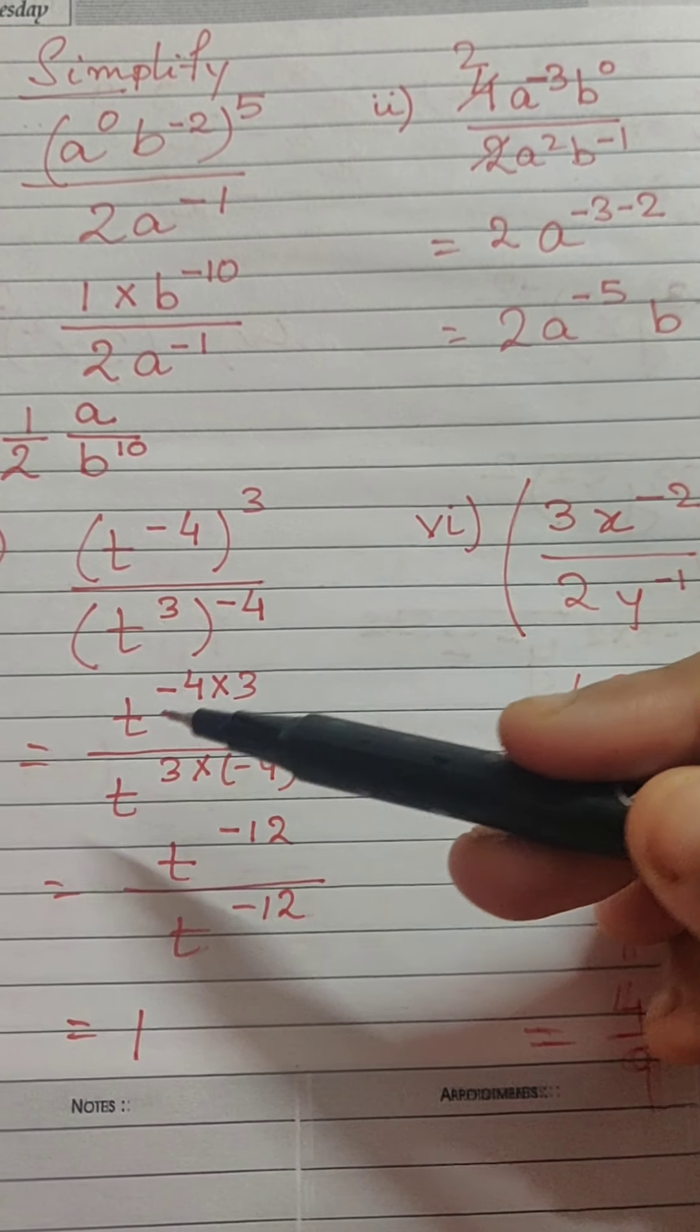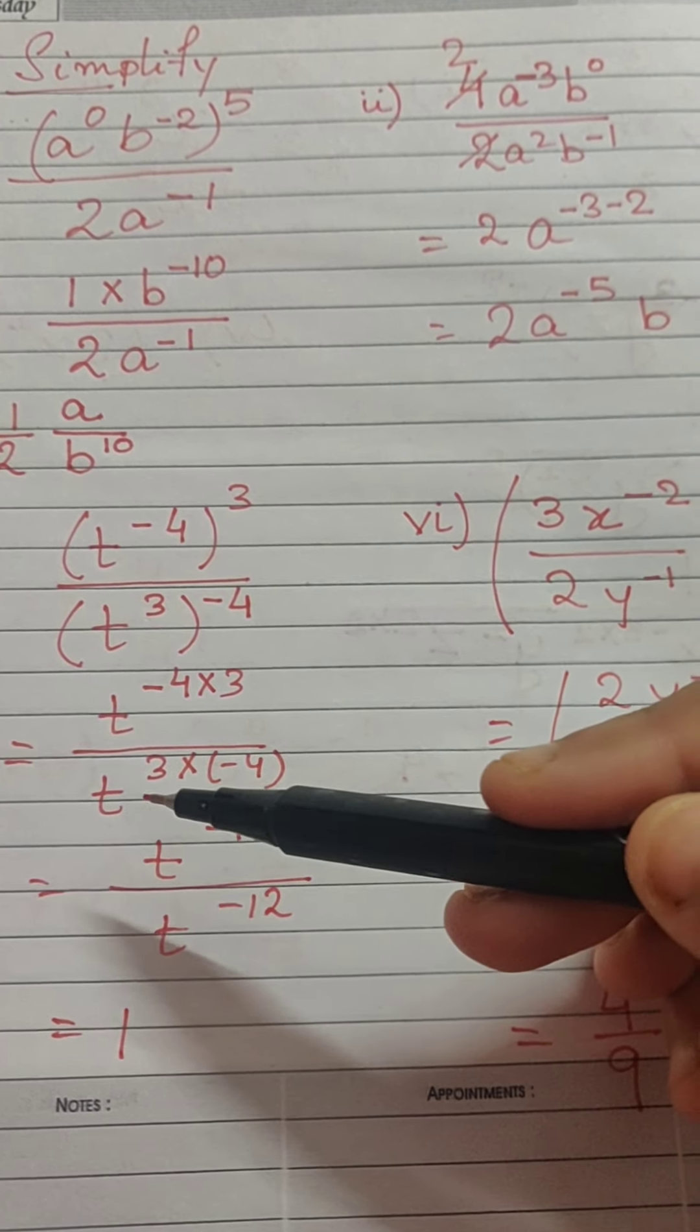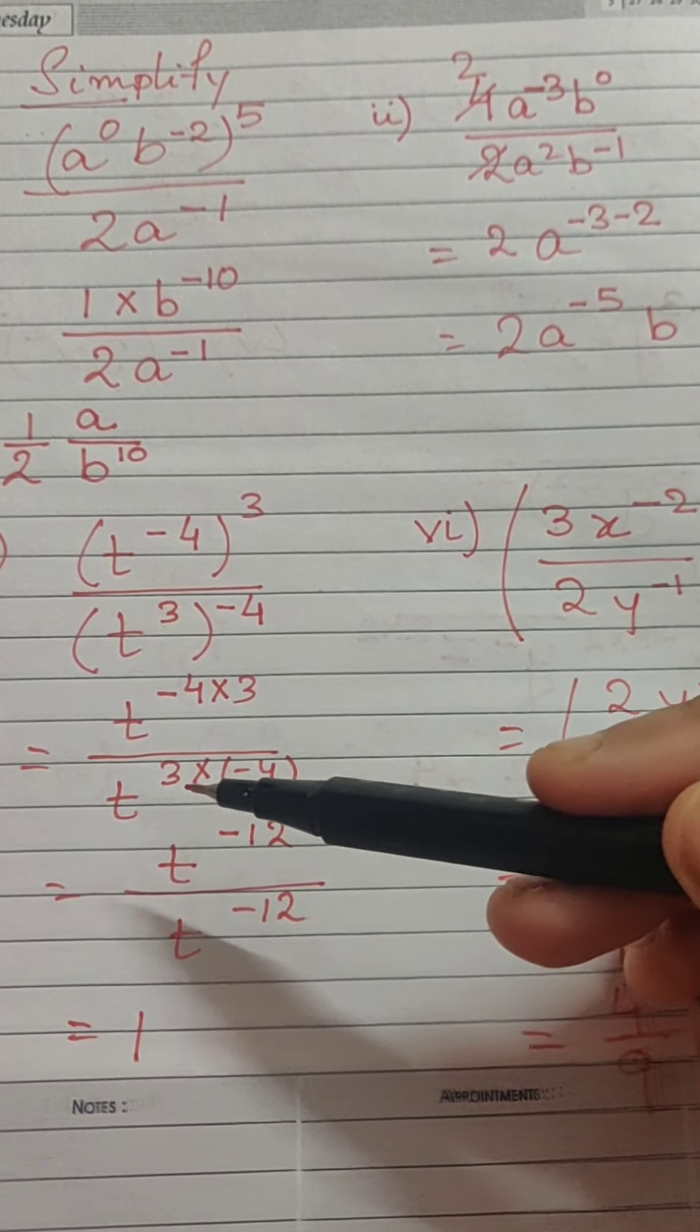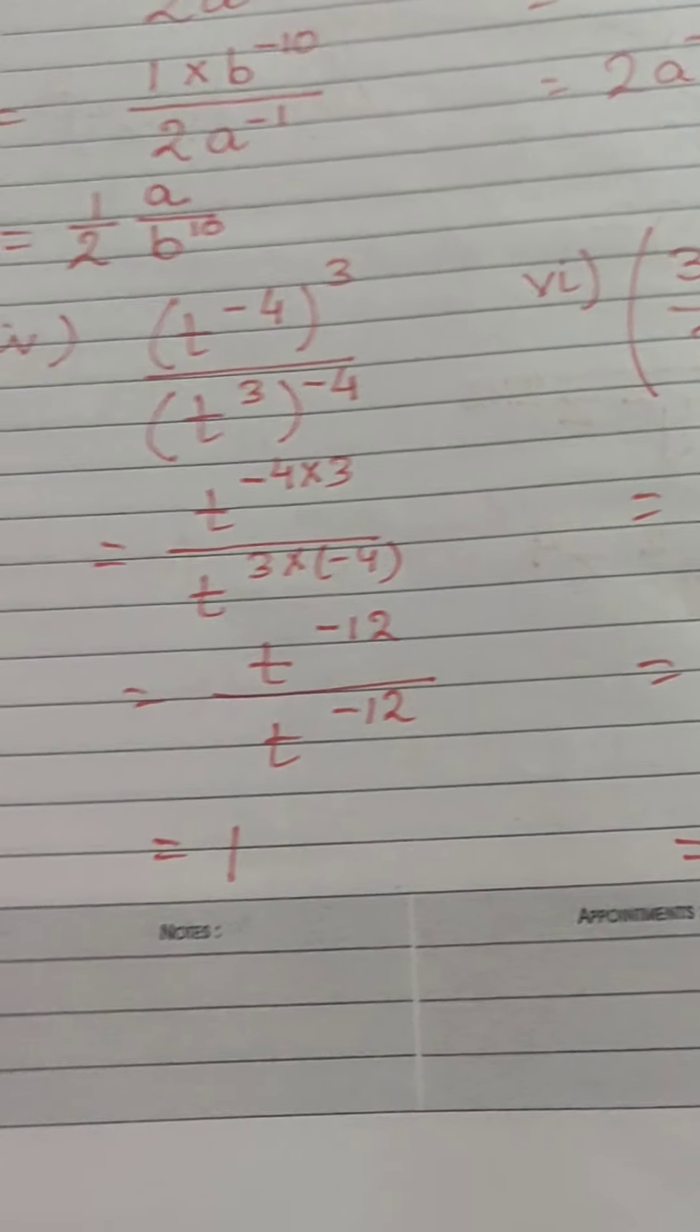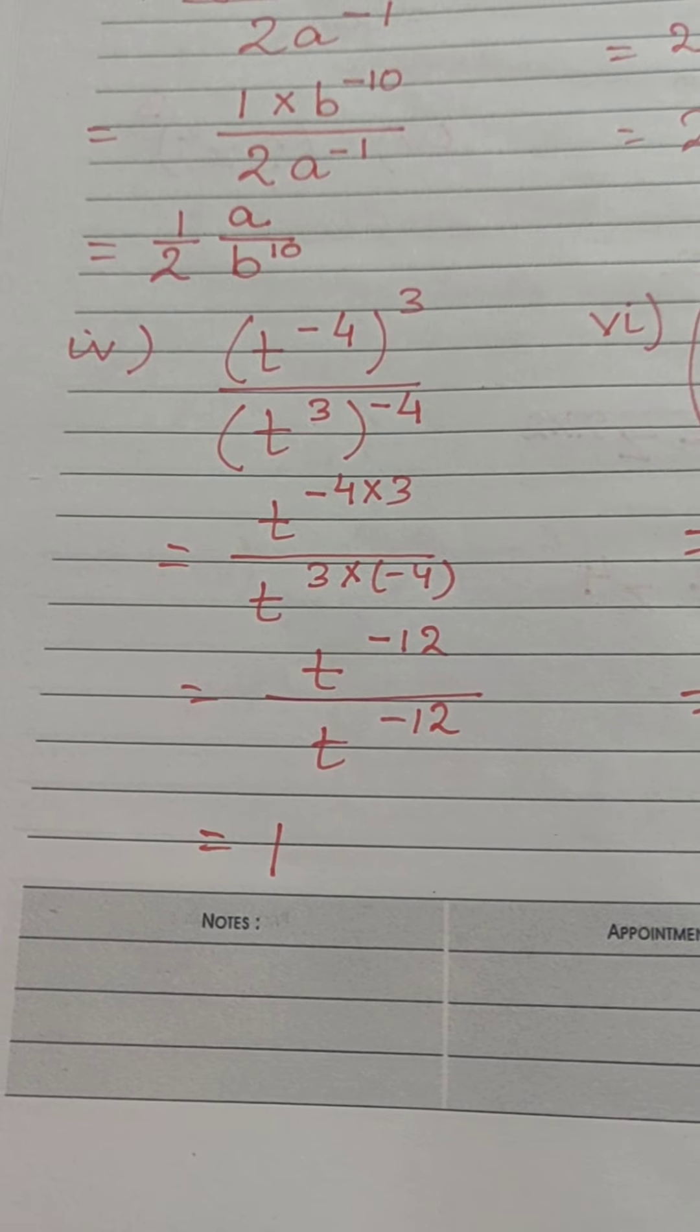So, if I follow the rule I get 2 to the power minus 4 into 3. In the denominator also I get 2 to the power 3 into minus 4. So, upon doing it we get 2 to the power minus 12 by 2 to the power minus 12 which gives us 1.